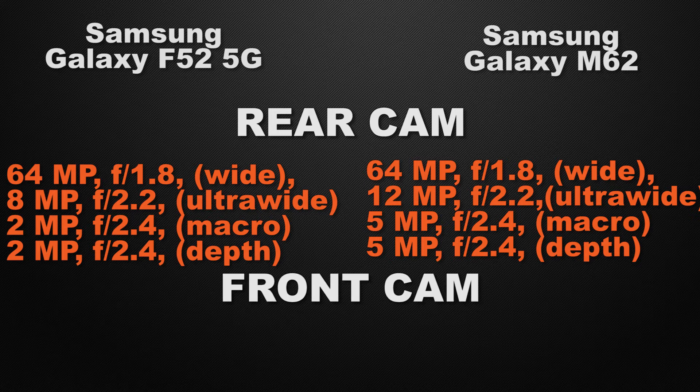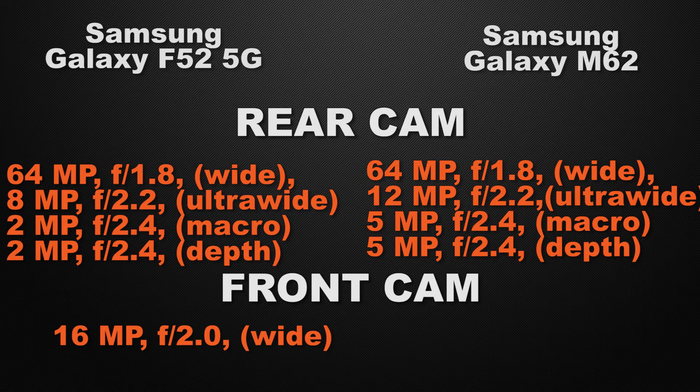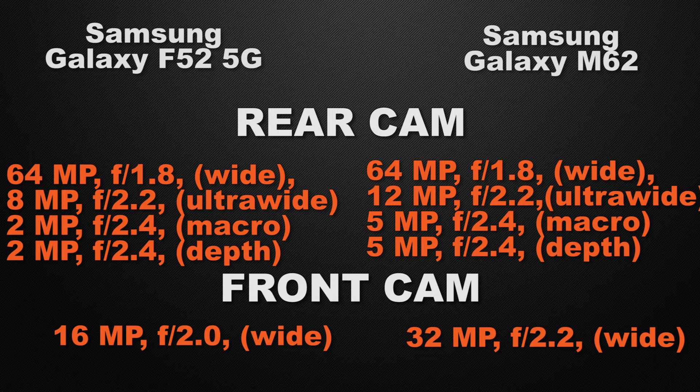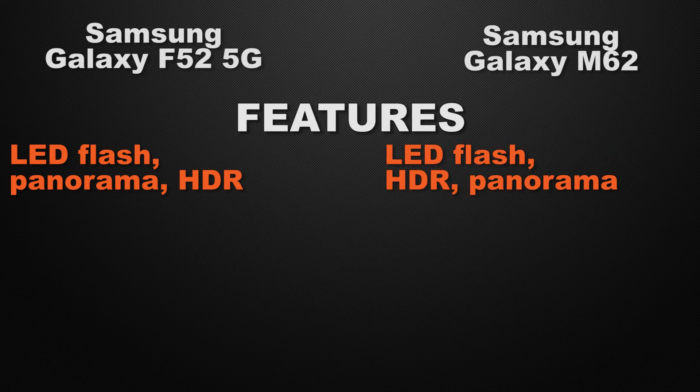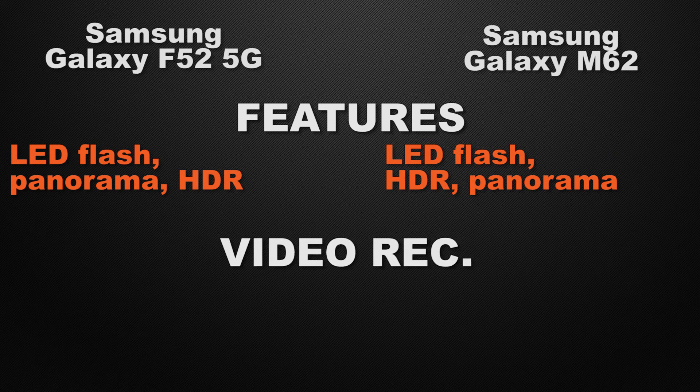About the front camera of the devices, the F52 has a 16MP wide camera, whereas the M62 has a 32MP wide camera. So the winner here is the M62 because it can take less noisy photos in low light conditions. Talking about camera features, both the F52 and M62 have LED flash, HDR, and panorama, so it's a tie.